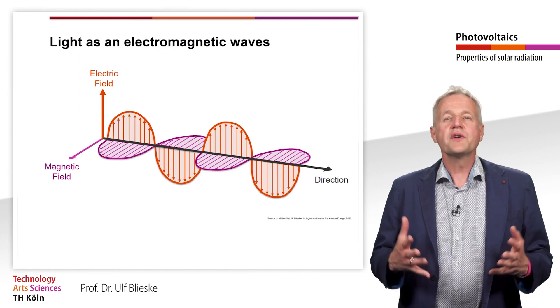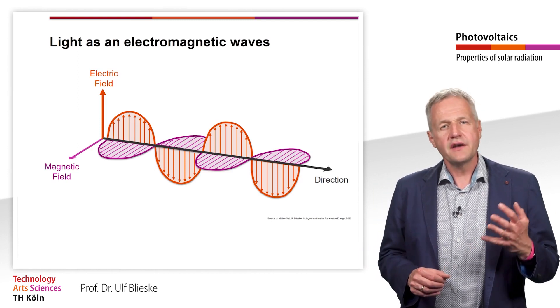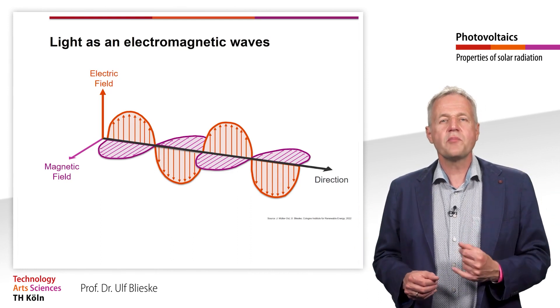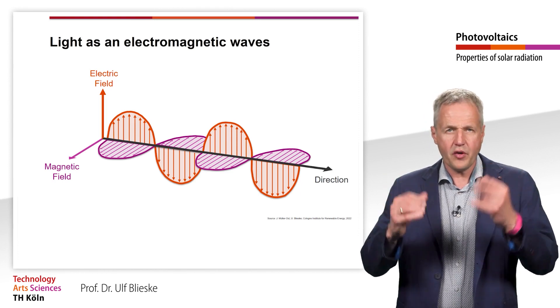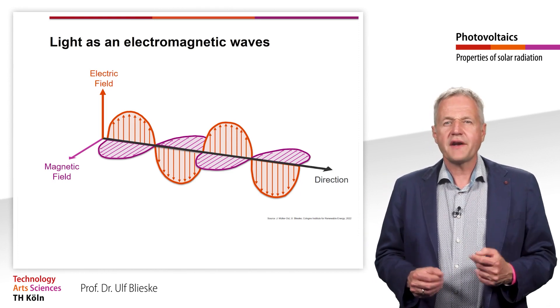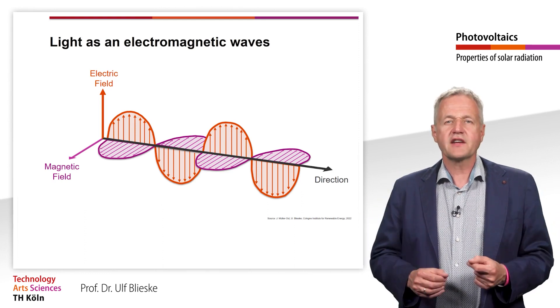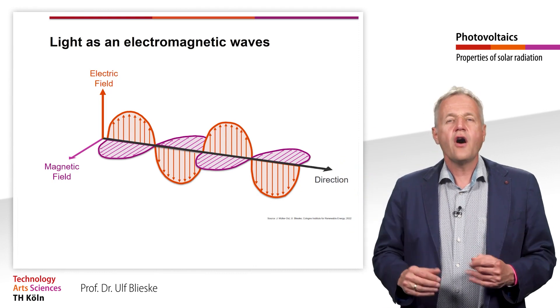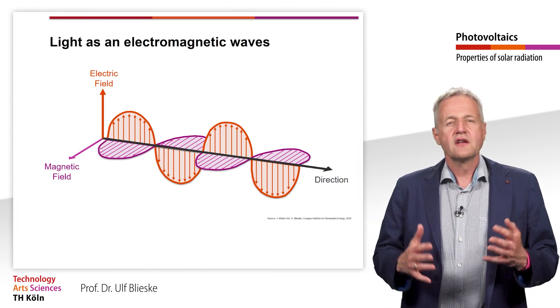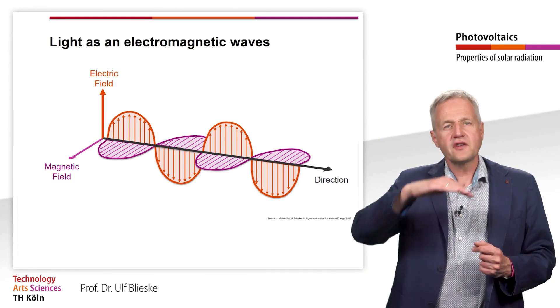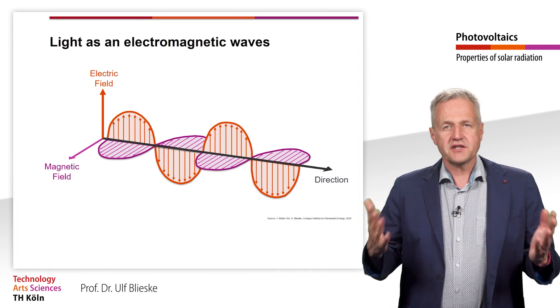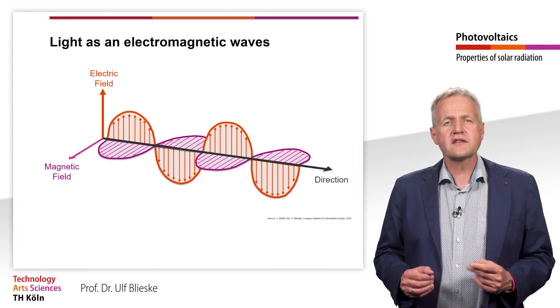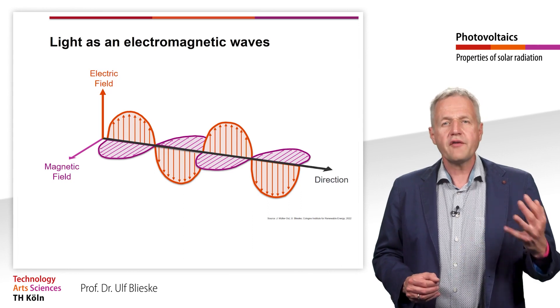We will now deal with this solar radiation in a little more detail. Many properties of solar radiation can be understood by looking at its wave properties. We can describe radiation as electromagnetic waves, that is, as propagating oscillations of the electromagnetic field. The electric field oscillates perpendicular to the magnetic field. The distance between the two wave peaks corresponds to the wavelength lambda.